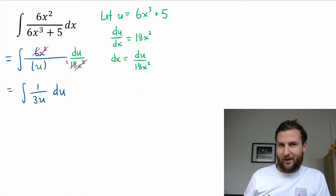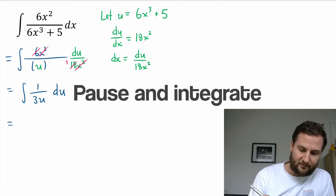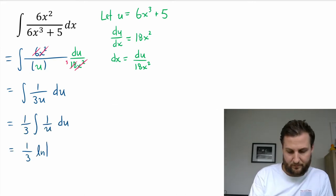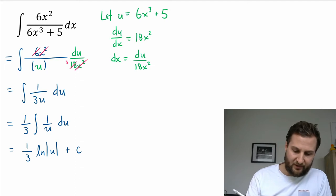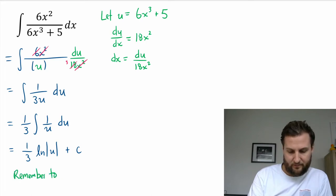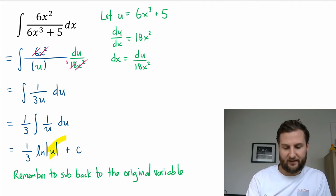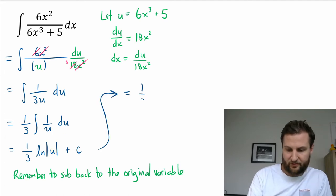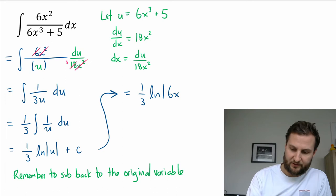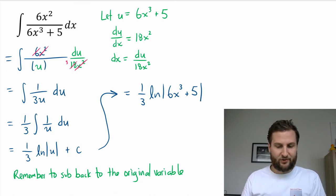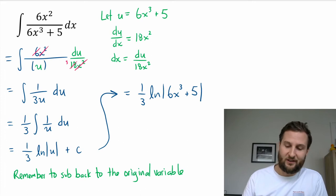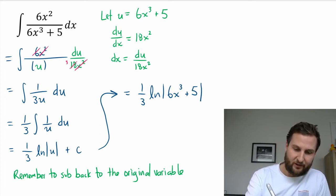That 1/3 is a constant we can move out front. I still have a u in my answer here, and I need to remember to sub back to x. Instead of natural log of u, I'm going to have ln of 6x³ + 5. This function looks interesting; I'm not sure I would have been able to integrate it without using a method like substitution. We can do a quick derivative to check.